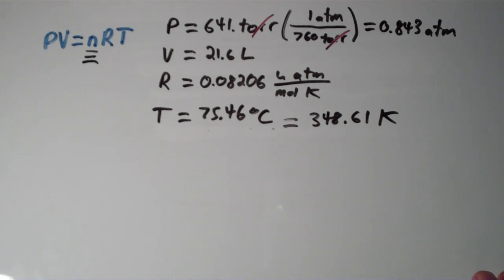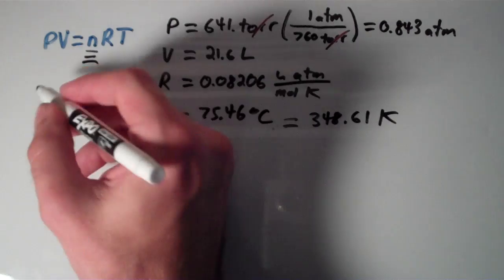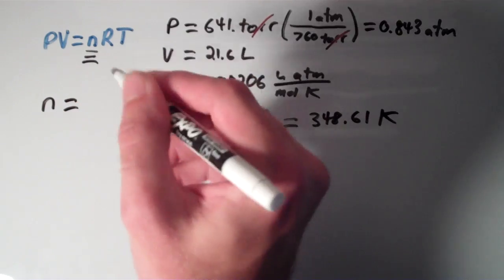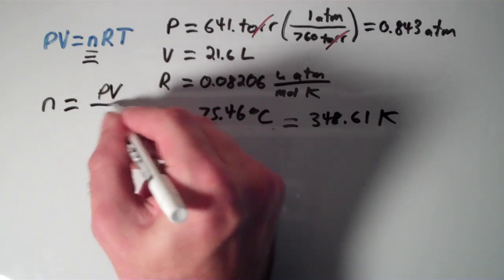So if we solve for n in the equation PV equals nRT, that is as simple as dividing both sides of the equation by RT. And we'll get that n is equal to PV over RT.